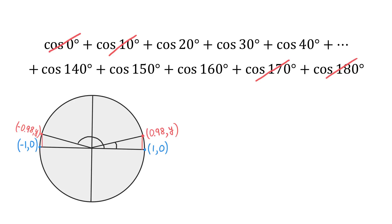The same will be with cosine of 20 degrees and cosine of 160 degrees. Then cosine of 30 degrees will cancel with cosine of 150 degrees. Cosine of 40 degrees will cancel with cosine of 140 degrees. Then somewhere in the middle, we will have cosine of 90 degrees. But cosine of 90 degrees is 0.